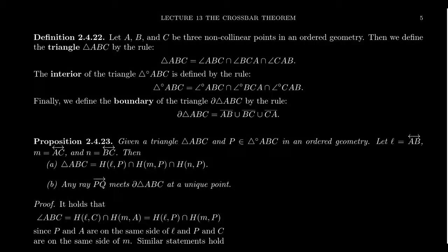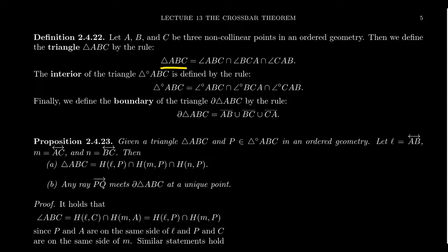In this video, we're going to conclude Lecture 13 by finally defining what a triangle is. A triangle is defined using three non-collinear points in an ordered geometry. Call those points A, B, C. Then the triangle ABC is defined as the intersection of three angles — hence the name, triangle. The three angles are ABC, BCA, and CAB.